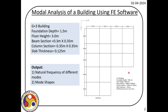Let us quickly go through the details before we discuss today's topic, which is time history analysis. We have an asymmetric plan building — a G plus 3 building where the depth of foundation is 1.5 meters, floor height is 3 meters, and we use uniform sections for beam and column. Beam sections are 0.3 by 0.35 meters, column sections are 0.35 by 0.35 meters, and the slab thickness is 125 millimeters.